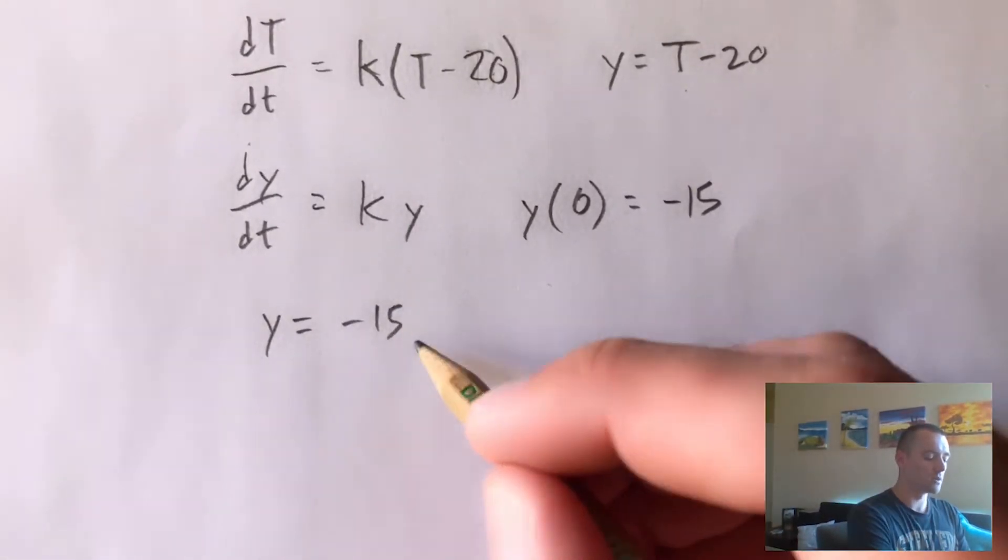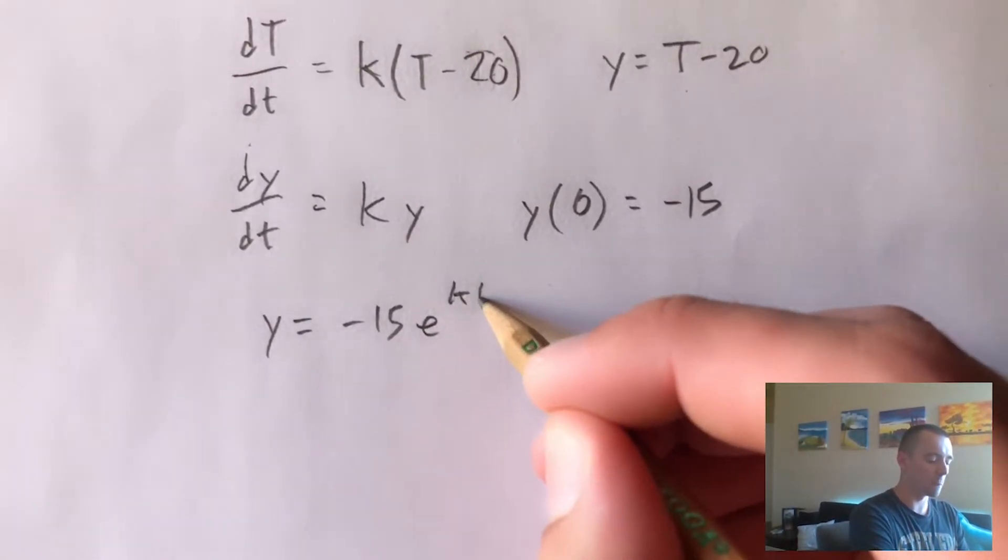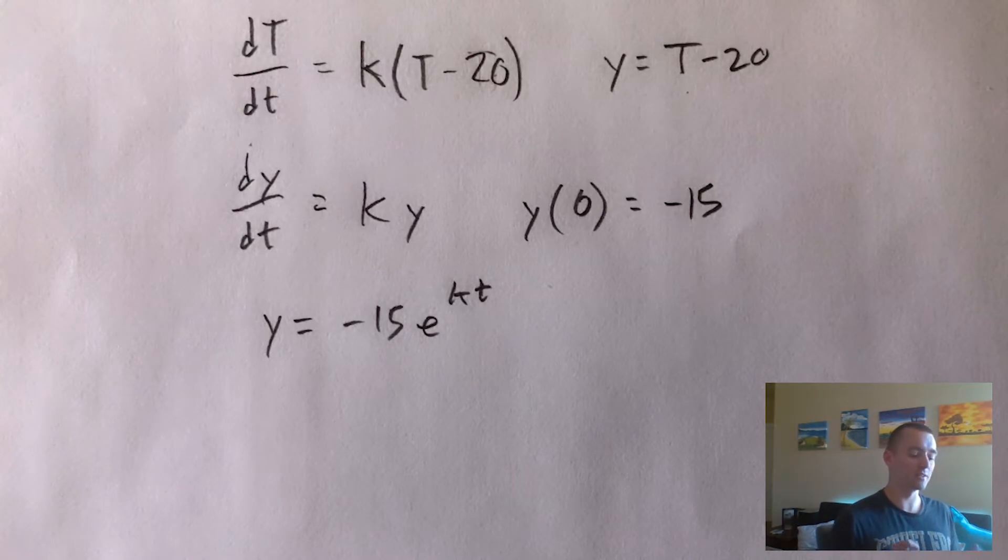We know that we're just going to get y equals our initial condition. So whatever y is when t is zero, negative 15 times e to the kt. So now what we need to do is solve for k, we need to figure out what this unknown constant is.